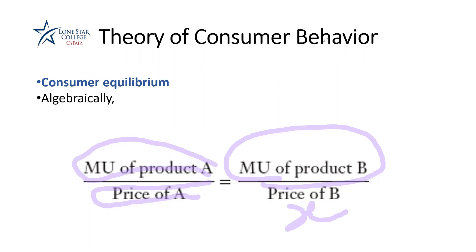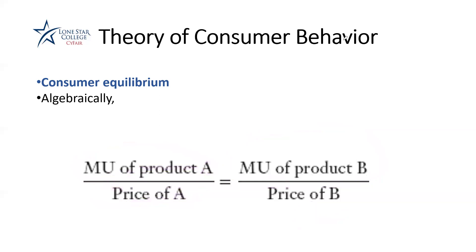That's the only application of this formula for our class. That's pretty much it for this chapter. As you can see, I kept this chapter kind of short. This is the only chapter that talks about utility, which is related to consumers. We're going to skip chapter eight — there won't be any questions from chapter eight, it's just a reading chapter. But starting from chapter nine, we are focused on production. That's pretty much it for this chapter — I hope you find it helpful. Take care, guys. Till next time.